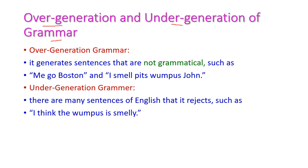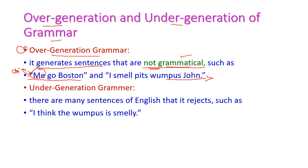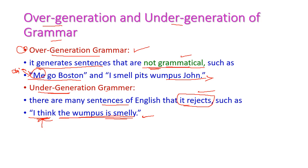The over-generation and under-generation of grammar. Over-generation means the grammar generates sentences that are not grammatical. For example, 'me go Boston' — 'me' is an object, not a subject, so this is not grammatically correct. The grammar generates a sentence which is not syntactically correct; this is called over-generation. Under-generation means there are many sentences of English that the grammar rejects. For example, 'I think the wumpus is smelly' — the grammar may only accept 'the wumpus is smelly', so there is no confidence here. This is called over-generation and under-generation of grammar.